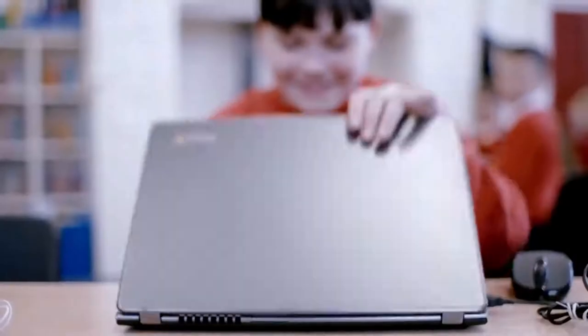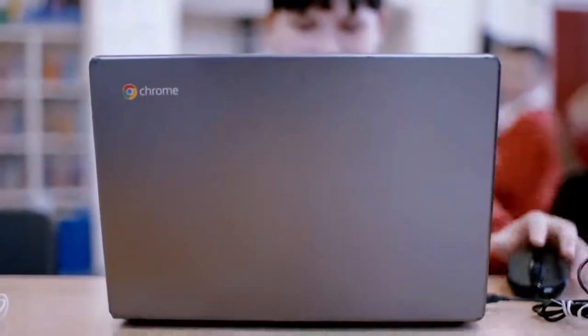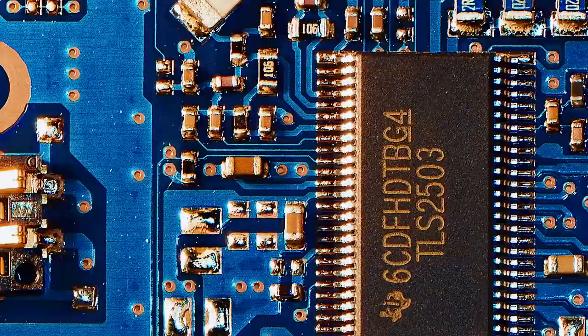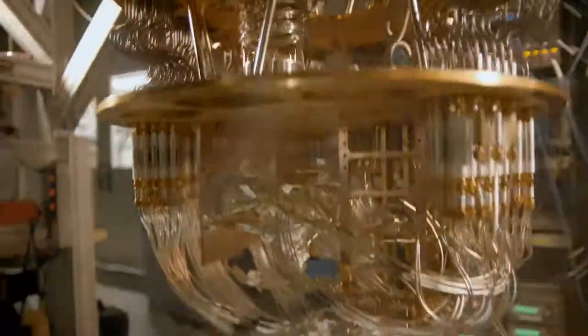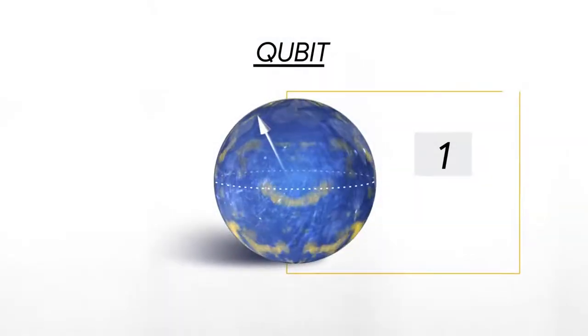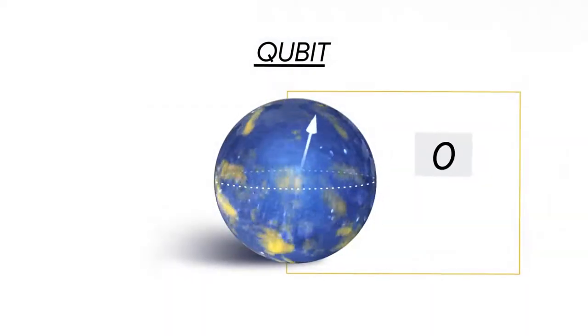The word quantum computer is a little bit misleading because it sounds like a computer, and when people think of a computer they think of a phone or a laptop. The truth is the phone, the laptop, and even a very powerful supercomputer all operate according to the same fundamental rules — and a quantum computer is fundamentally different. The classical bit stores information as a zero or one, and a quantum bit can be both zero and one at the same time.